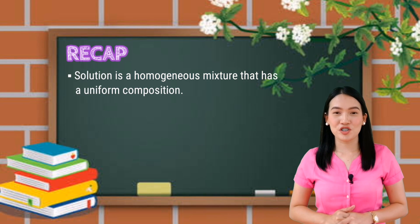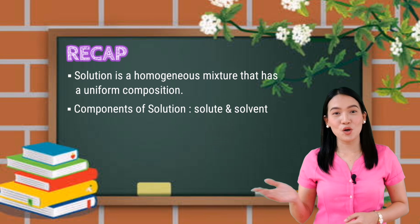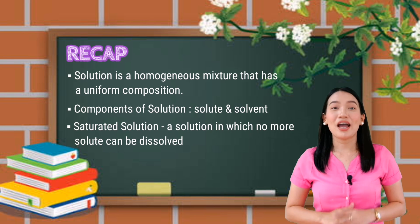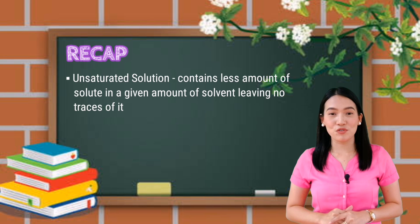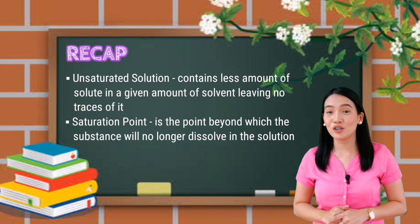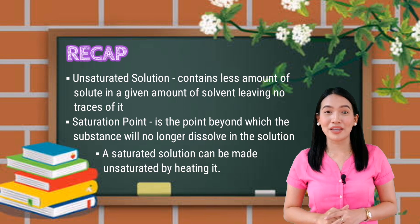Why don't we recap all that we have learned today? A solution is a homogeneous mixture that has a uniform composition. There are two components of a solution: the solute and the solvent. A saturated solution can be defined as a solution in which no more solute can be dissolved. An unsaturated solution is a type of solution containing less amount of solute in a given amount of solvent, leaving no traces of it. The saturation point is the point beyond which the substance will no longer dissolve. A saturated solution can be made unsaturated by heating it.